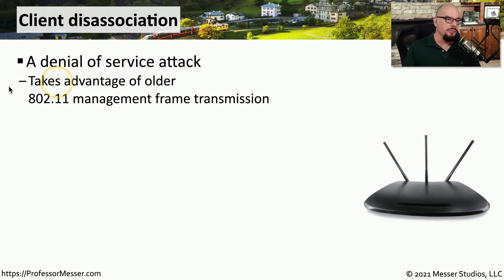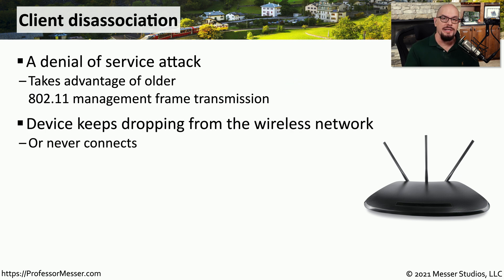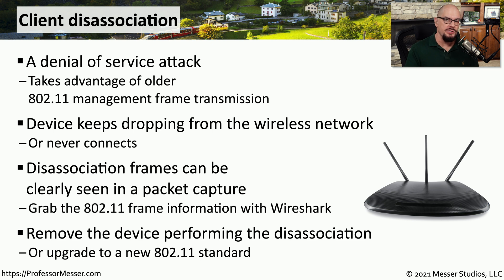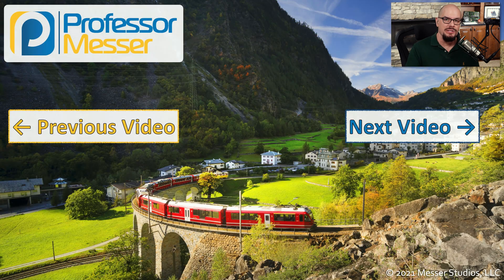On some older wireless networks, you may find a problem associated with client disassociation. This is a denial-of-service attack that prevents people from accessing the wireless network — they might be working fine and then suddenly their device disconnects. As long as someone is sending these disassociation frames, that machine will not be able to communicate on the wireless network. If you suspect a disassociation attack, you can get a packet capture with Wireshark and look at the 802.11 frames — it should be easy to see the disassociation frames. There are two ways to resolve this: remove the device performing the attack, or upgrade to one of the latest 802.11 standards, which prevents any type of disassociation attack.